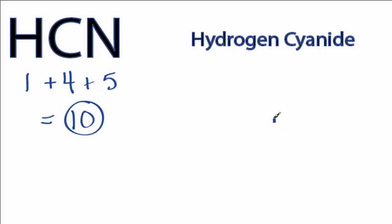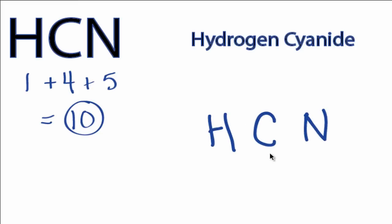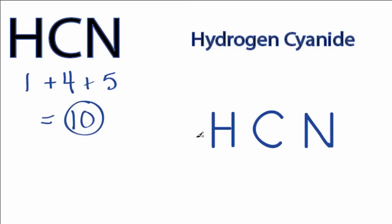We'll put the carbon in the center because it's less electronegative than the nitrogen, and hydrogens always go on the outsides of Lewis structures. We have a total of ten valence electrons. We'll put two between atoms to form chemical bonds — we've used four. Then we'll go around the nitrogen: